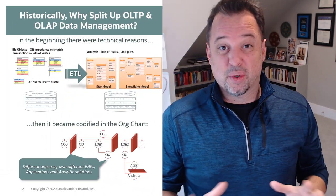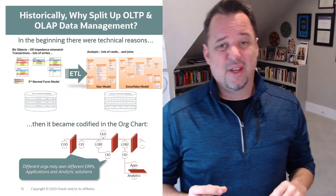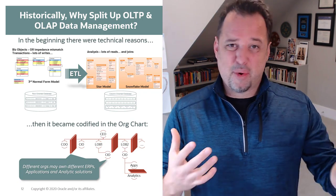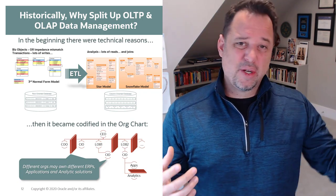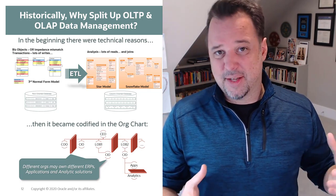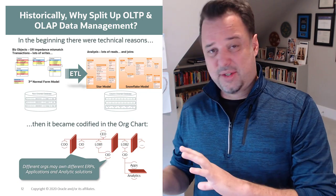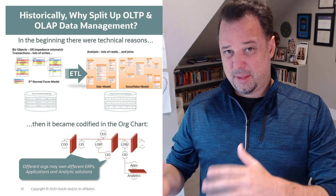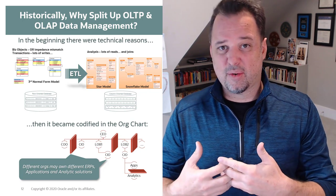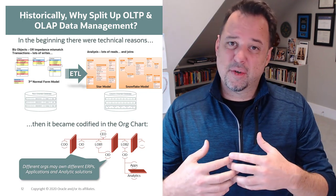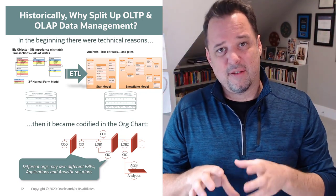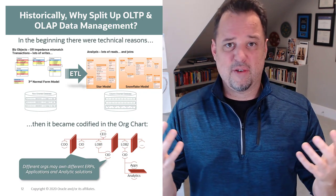So why did we split operational data from analytics data to begin with? Going back 40 or 50 years ago, there were some pretty good technical reasons. Operational systems are very write-intensive — it's about inserts and updates, and we had to optimize data structures for those purposes. In contrast, analytics systems are typically very read-intensive: issuing queries and making joins across the data. We've optimized everything from the modeling layers down to how we store data on physical disks in order to optimize for these two different use cases.